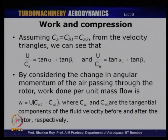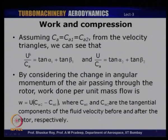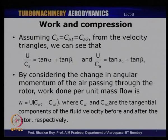We begin this analysis with the assumption that the axial velocity remains the same, so C_a1 equals C_a2. From the velocity triangle, we get the ratio u/C_a equal to tan α₁ + tan β₁ at the rotor inlet, and similarly u/C_a equal to tan α₂ + tan β₂ at the rotor exit. This directly follows from the velocity triangle if this assumption of constant axial velocity holds.